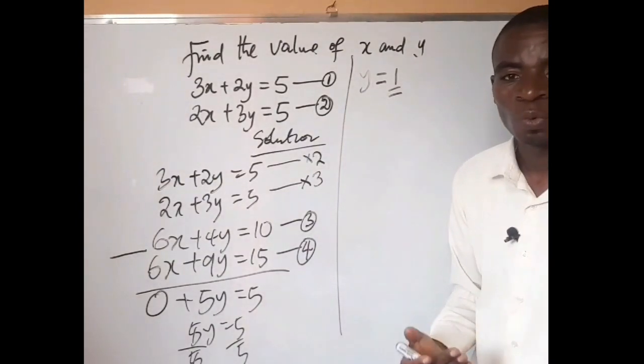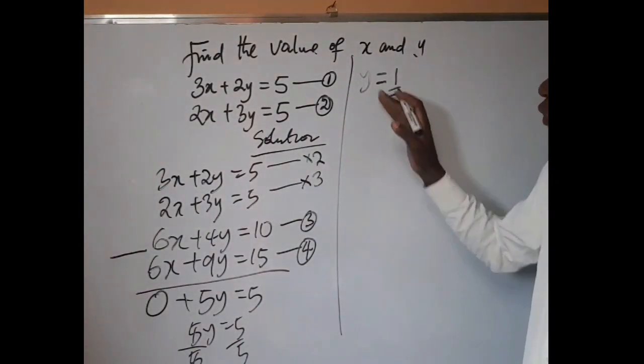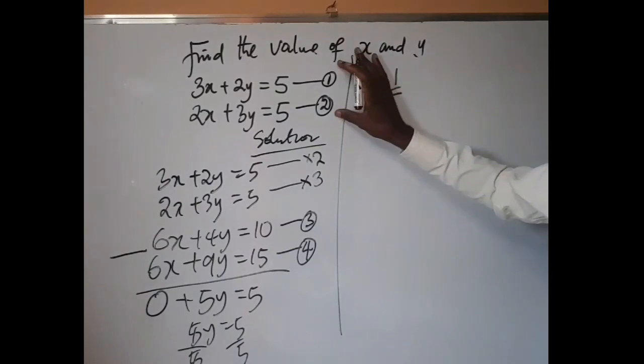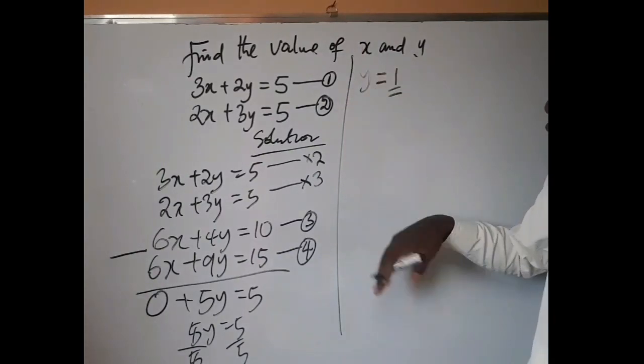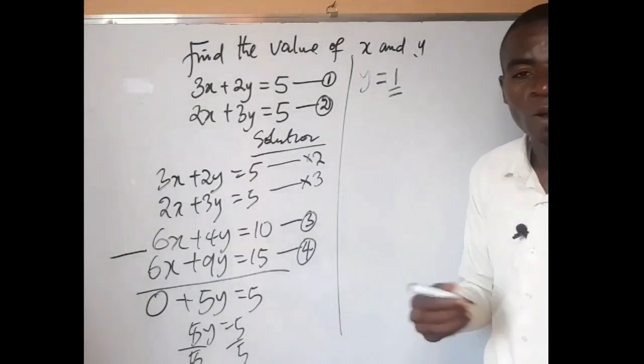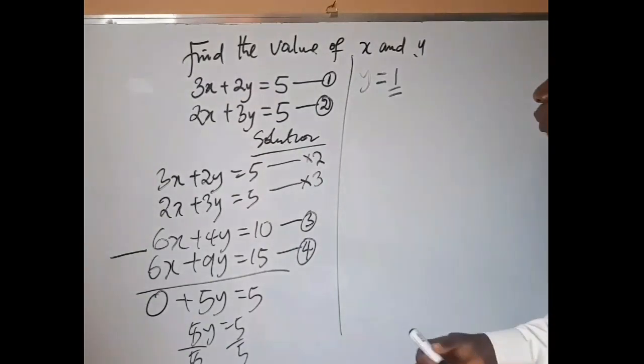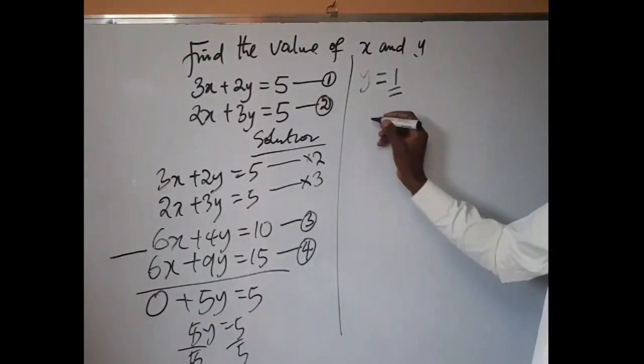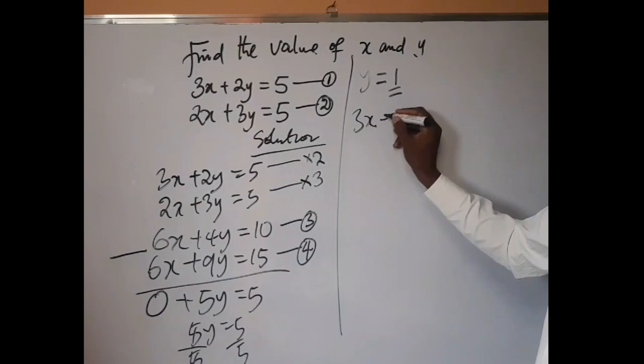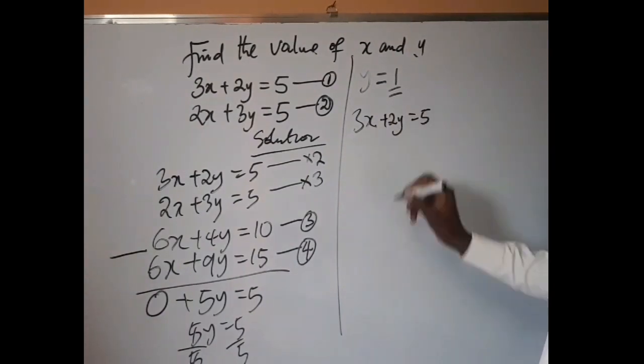It means that our y in this very equation is equal to 1. So we substitute y into any of the equations. It can be equation 1, 2, 3, or 4. We're still going to arrive at the same result. So picking equation 1, we have 3x plus 2y equals 5.